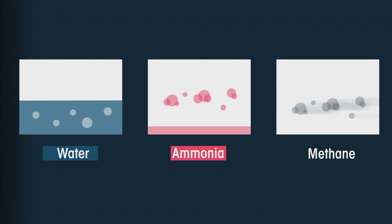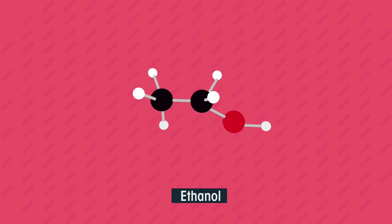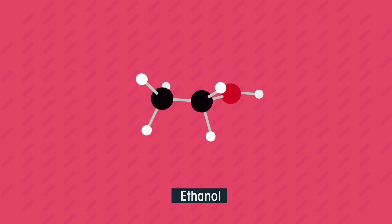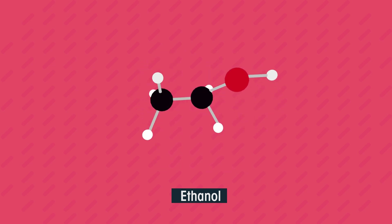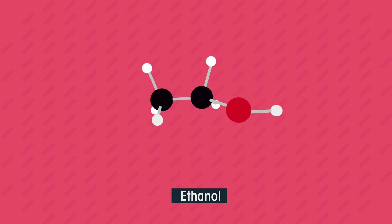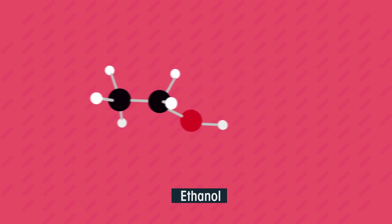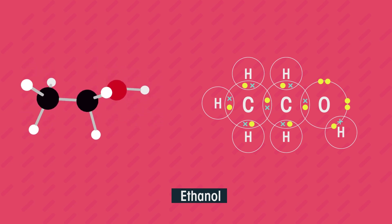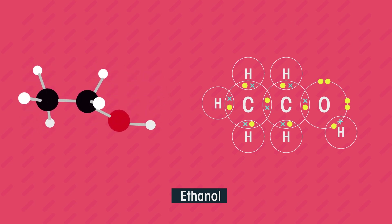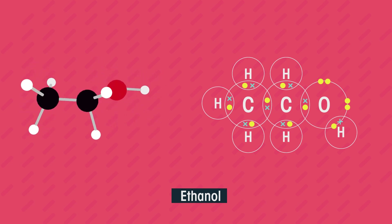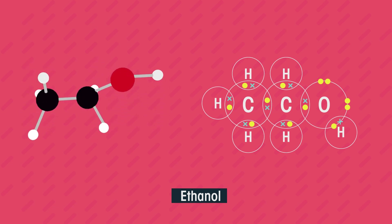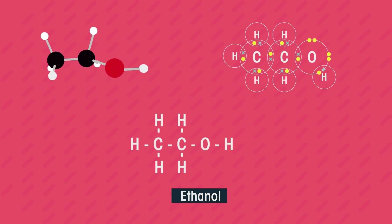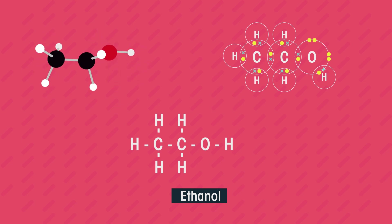Now let's look at something a little harder: ethanol. This contains carbon and oxygen bonding. How would you draw the two kinds of dot and cross diagrams of ethanol? Pause the video whilst you figure it out. Dot and cross diagrams of ethanol would look like this. Don't worry if you drew the dots or crosses the other way around — that is also correct. As you can see, the carbon atoms always form four bonds and the oxygen forms two. We can also draw this molecule using lines to represent bonds — this is the displayed formula.